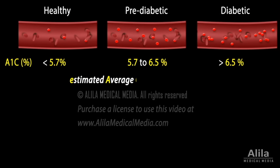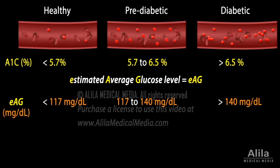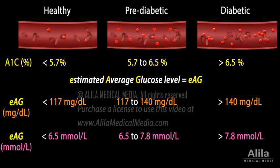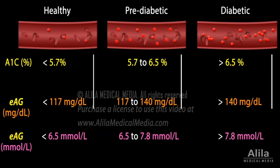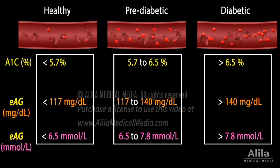An estimated average glucose level, or EAG, measured in concentration units — milligrams per deciliter or millimoles per liter — can be calculated and often reported in addition to the A1c percentage. EAG helps patients link A1c to the numbers they obtain at home using a blood sugar measuring device.